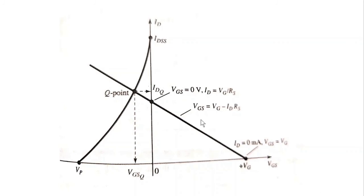Here we have this line plotted, which is the network equation Vgs is equal to Vg minus Id times Rs. The first point is when Id is equal to 0 and Vgs is equal to Vg, and the second point is when Vgs is equal to 0 and Id is equal to Vg divided by Rs. We draw a straight line joining these two points — this is our network curve.